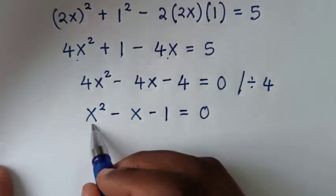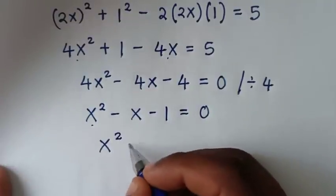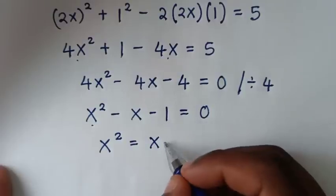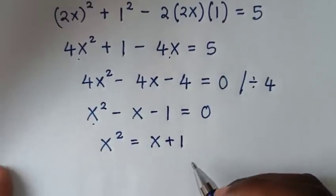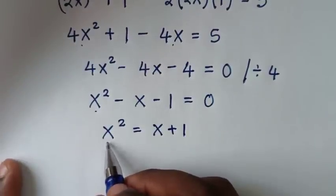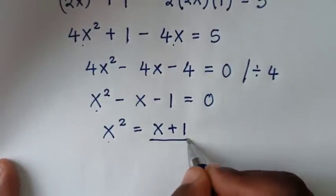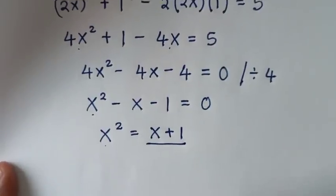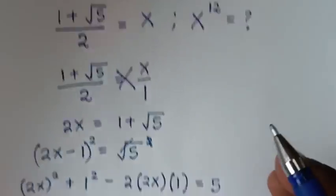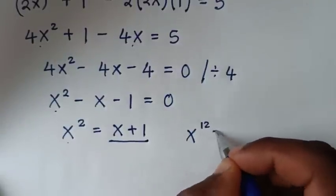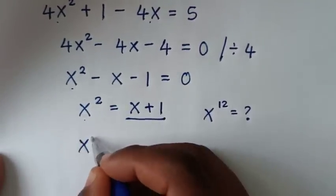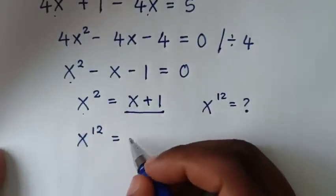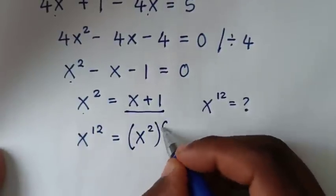From here, we make x² the subject. So x² = x + 1. We note this key identity: x² = x + 1. Now, to find x^12, we write x^12 = (x²)^6, using the identity x² = x + 1, so x^12 = (x + 1)^6.